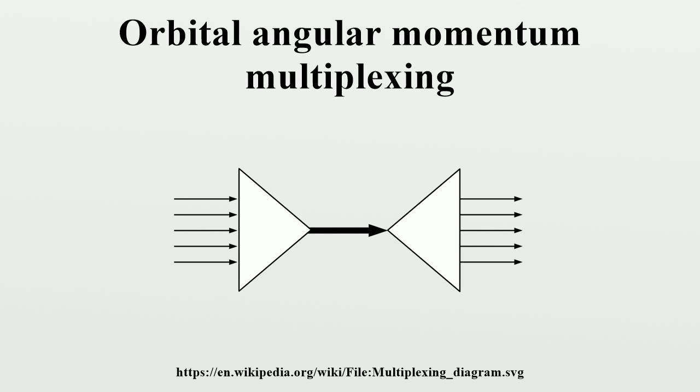Orbital angular momentum is one of two forms of angular momentum of light. OAM is distinct from and should not be confused with light spin angular momentum.